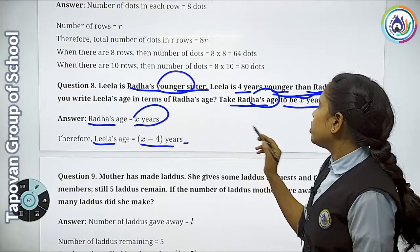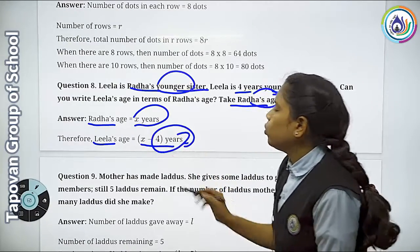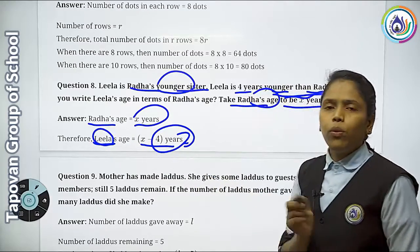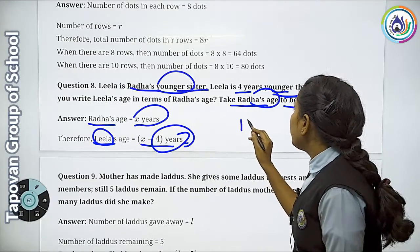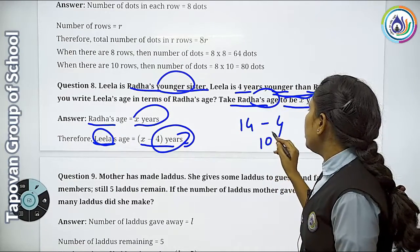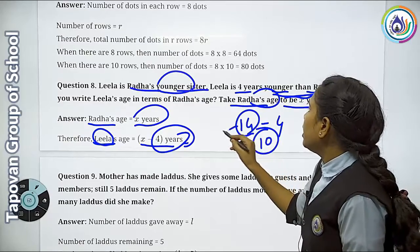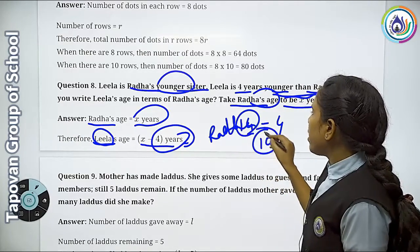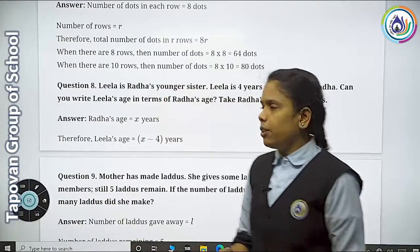Whatever the original age of Radha turns out to be, because Leela is 4 years younger than her. If Radha's age is 14, then I subtract 4 — so 10 years would be Leela's age. So whatever age Radha has, we subtract 4 years from it, and we get Leela's age.